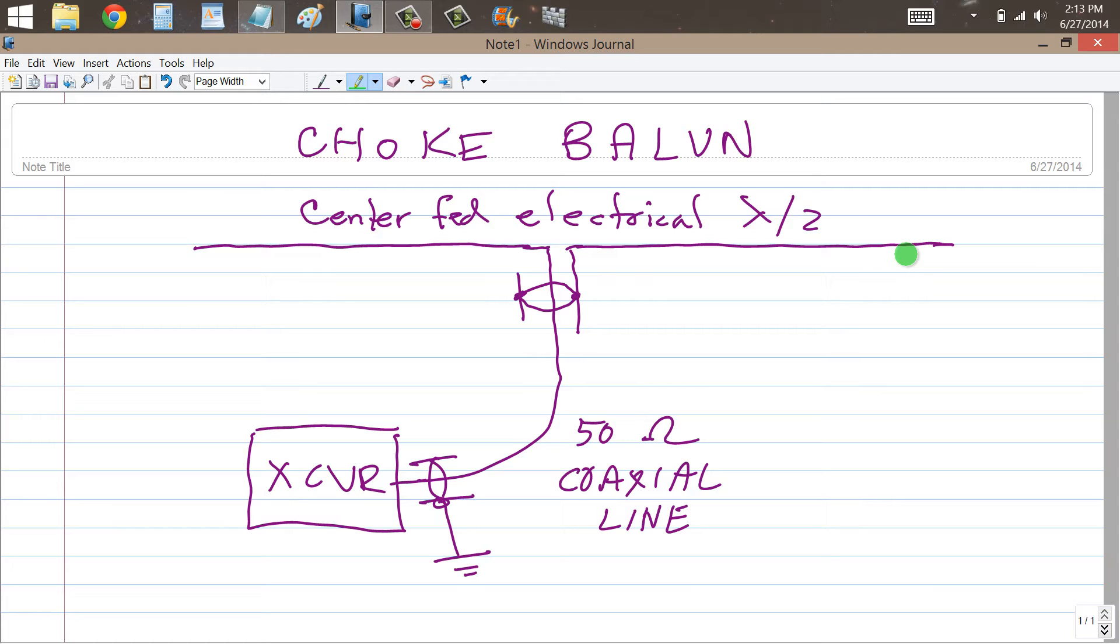This was the very first antenna I had back in 1966 as WN0OKV, Ocean Kilovictor, in Rochester, Minnesota. A 40-meter center-fed dipole, 33 feet long, fed with 50-ohm coaxial line.